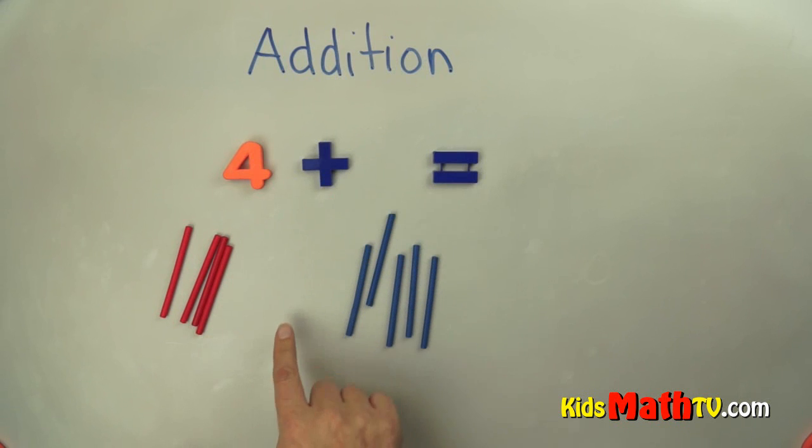Four red sticks and we're going to add those four red sticks to these blue sticks. I'm going to count one, two, three, four, five blue sticks.